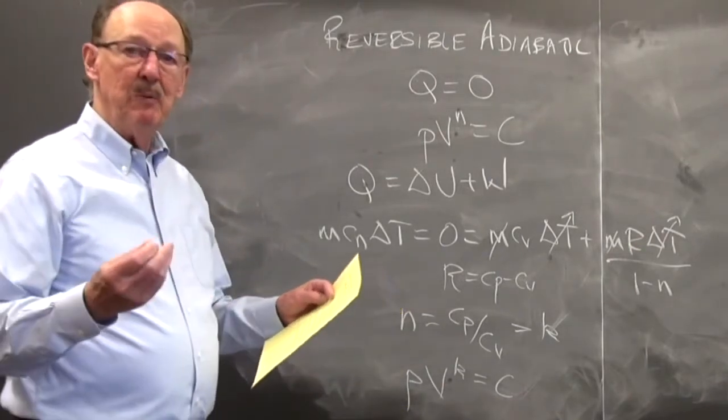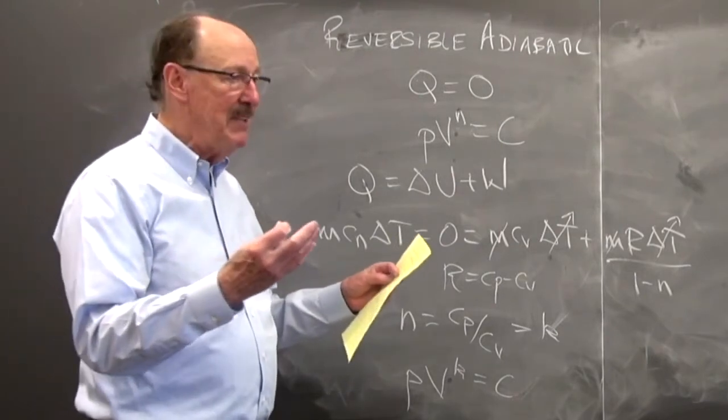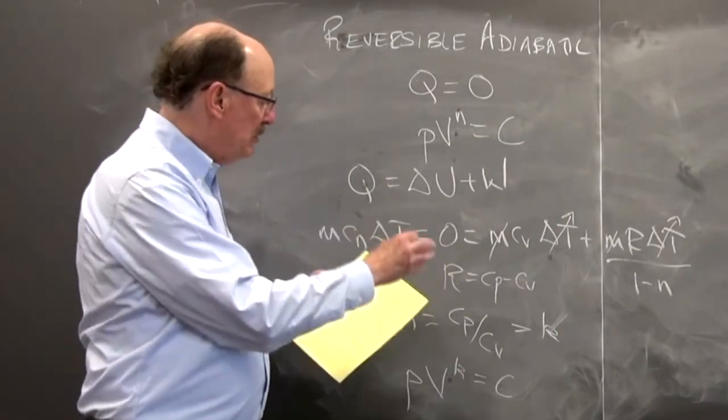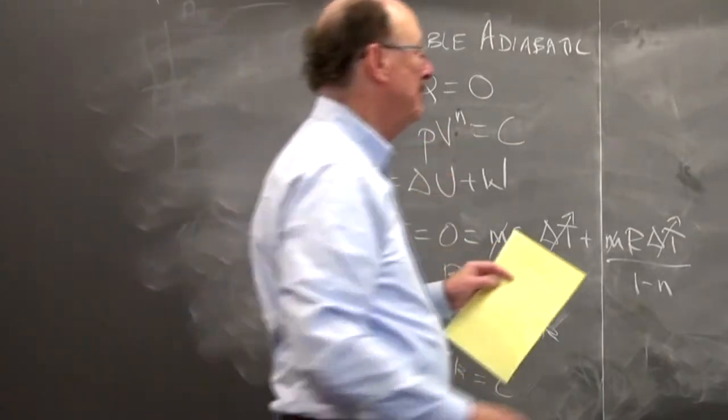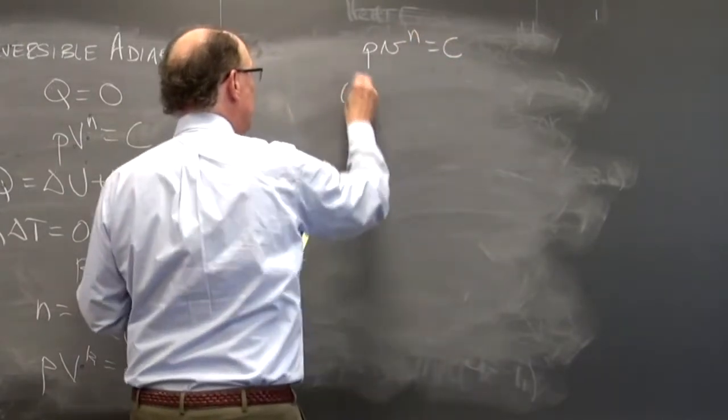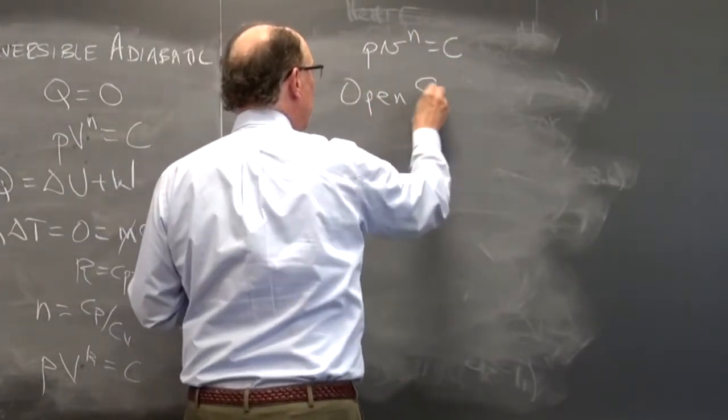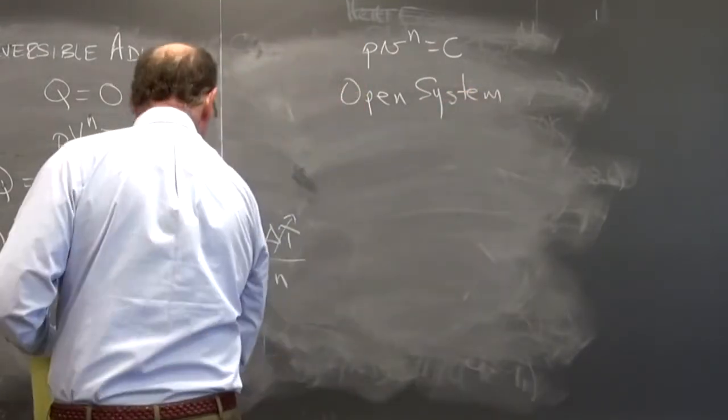Now let's introduce what we need for an open system so we can apply the same rules that we have now for not a closed system but this knowledge PV to the N. Again, it could be small specific volume to the N. So I could have PV to the N is equal to a constant. Now let's look at an open system for a polytropic process.